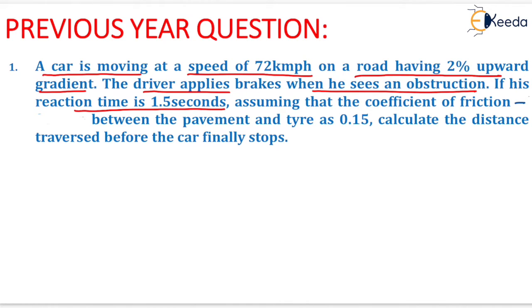It means that it is the value of TR. Assuming that the coefficient of friction between the pavement and tire is 0.15, it means that the value of small f is given as 0.15. Calculate the distance traversed before the car finally stops.